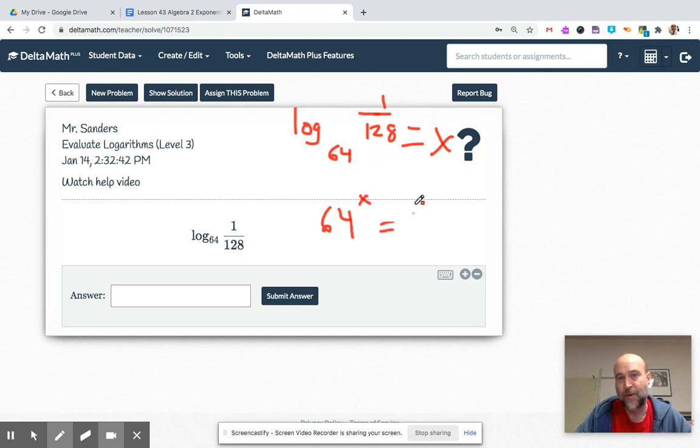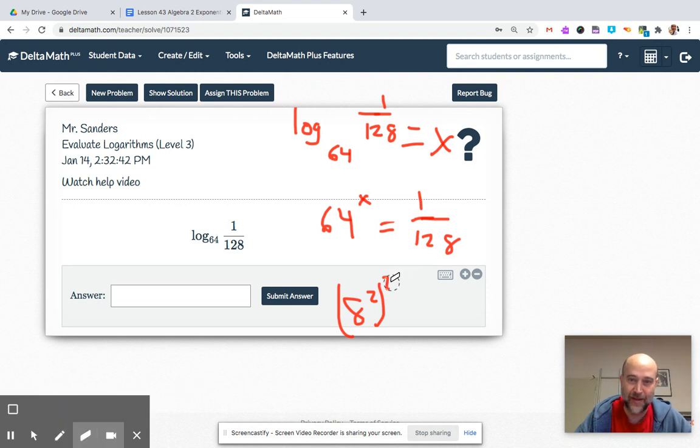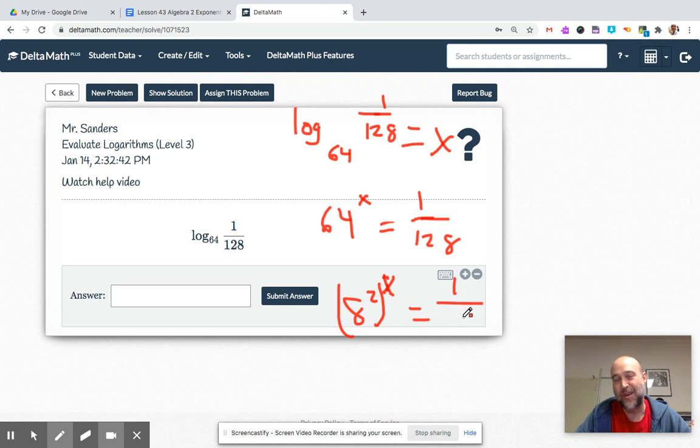Our base is 64. Logarithms are always equal to the exponent. 64 to the power of 8, 8 times 8. It's an x if I can make it, and then 1 over 128.